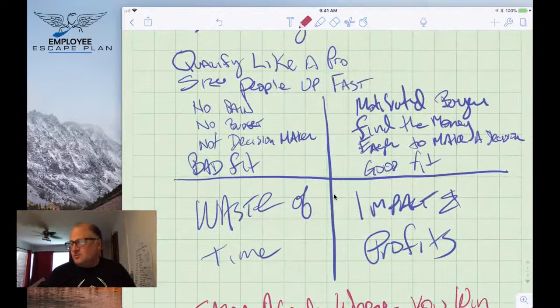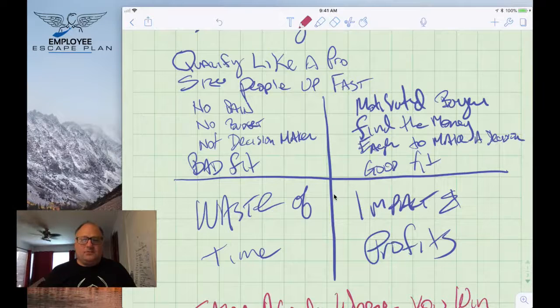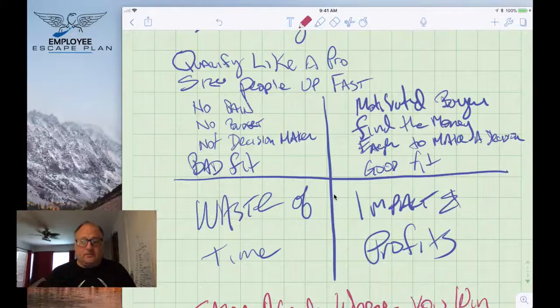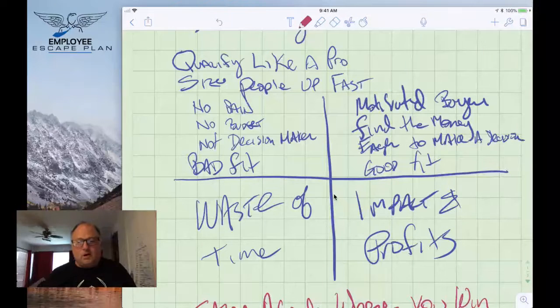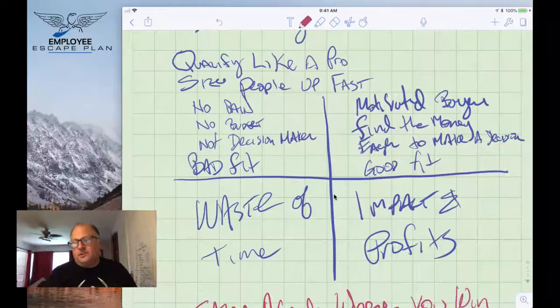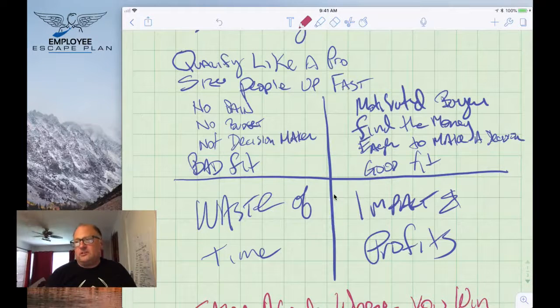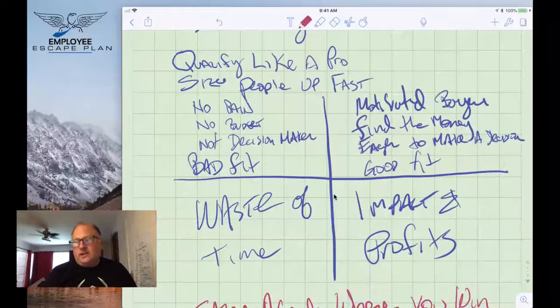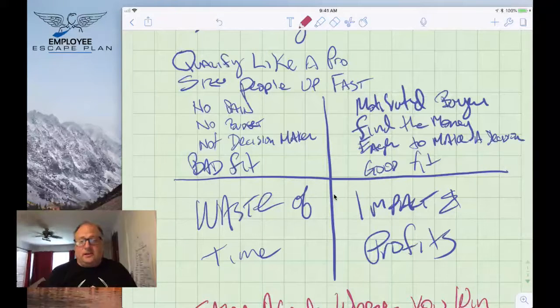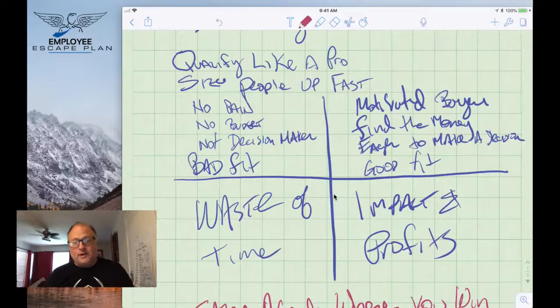I sketched out some notes. Number one, if you're dealing with the wrong people, you're dealing with people that are not in pain. They're not motivated to buy. If you don't qualify good, you end up spending your time with people that don't have a budget or they're not capable of making a decision. They end up being a bad fit and the whole thing ends up being kind of a waste of time.